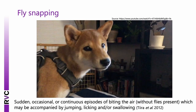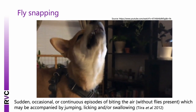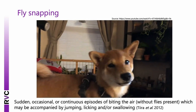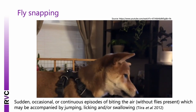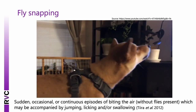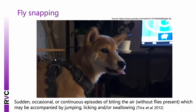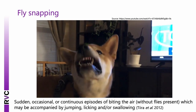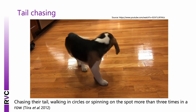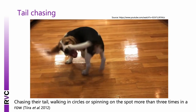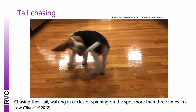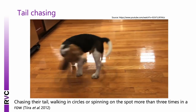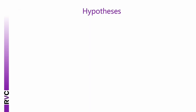Fly snapping is categorised by sudden, occasional or continuous episodes of biting the air without flies present, possibly accompanied by jumping, licking or swallowing. Tail chasing is defined as chasing the tail, or walking in circles or spinning on the spot more than three times in a row. Our study hypotheses fell into four categories: breed grouping (pastoral dogs selected for sensory capacities, or those with lower enrichment, showing higher ARBs); early life environment (non-home breeders, puppy mills, or rescue/kennelled dogs being more at risk); and current environment factors.